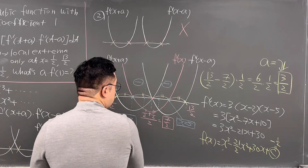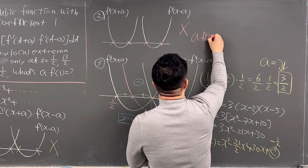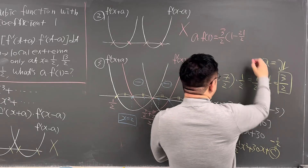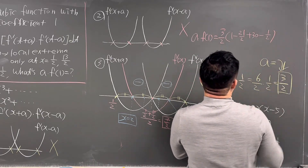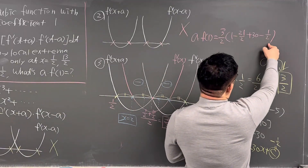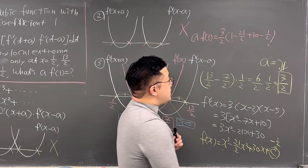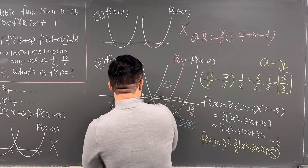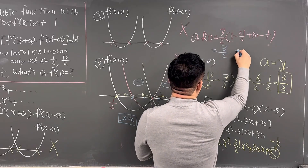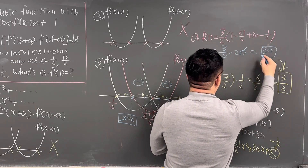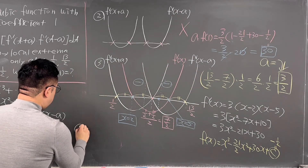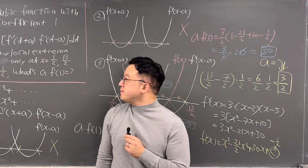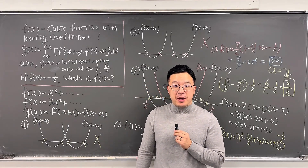So a × f(1) = (3/2) × (1 - 21/2 + 30 - 1/2). Calculating: 1 - 1/2 = 1/2; then 1/2 - 21/2 = -20/2 = -10; then -10 + 30 = 20. So this is (3/2) × 20 = 30. The answer is a × f(1) = 30. Pretty interesting killer calculus question from Korean SAT Math — how amazing!